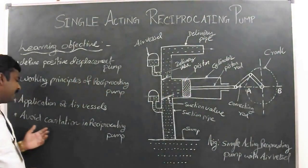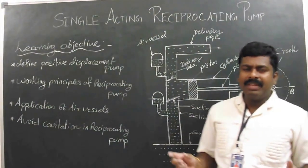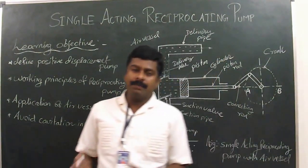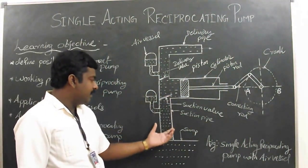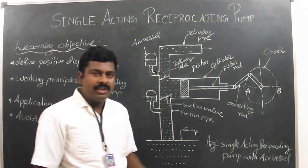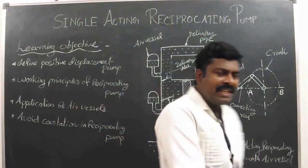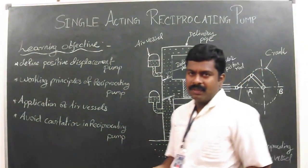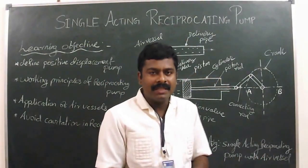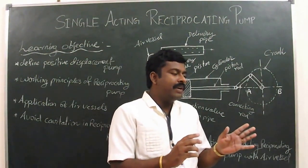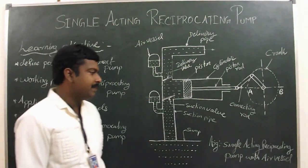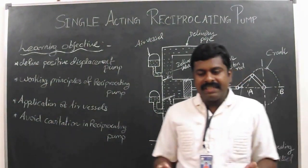Cavitation is the phenomenon of formation of vapor bubbles when the liquid pressure falls below the vapor pressure. In a reciprocating pump, if a large suction pipe is used, the liquid pressure can drop below the vapor pressure, causing water to convert into vapor bubbles. To avoid cavitation, the suction pipe should be less than 10 meters — ideally 3 to 5 meters. If cavitation occurs in a single-acting reciprocating pump, it produces noise and vibrations.